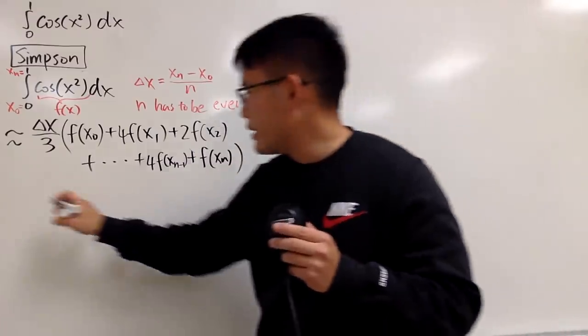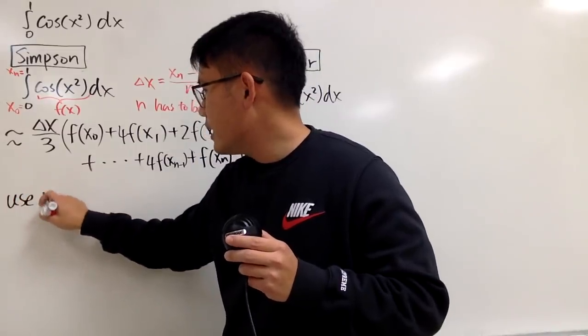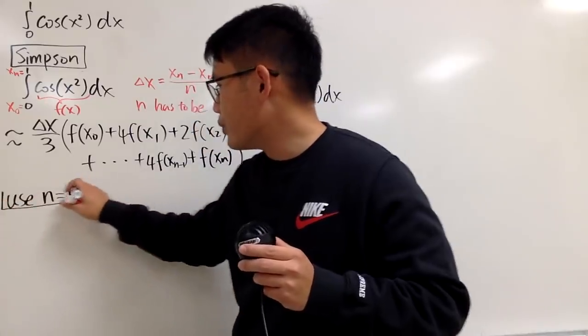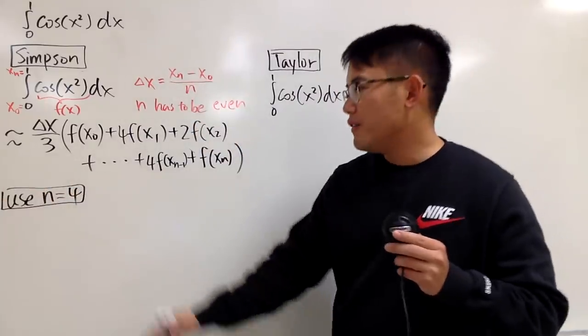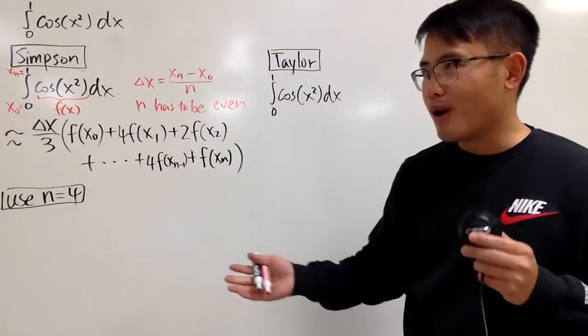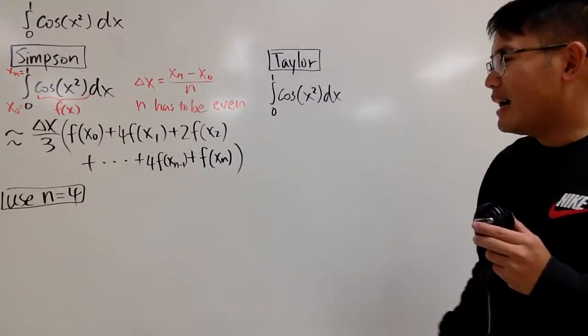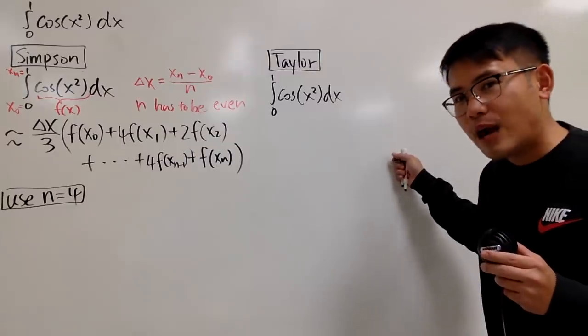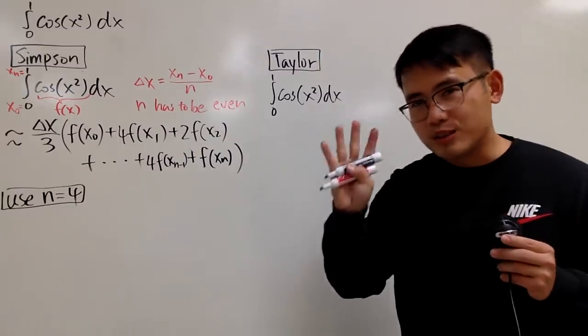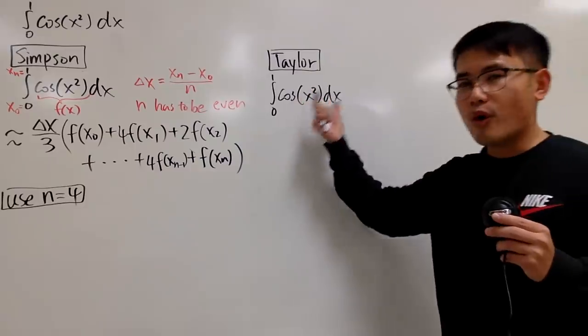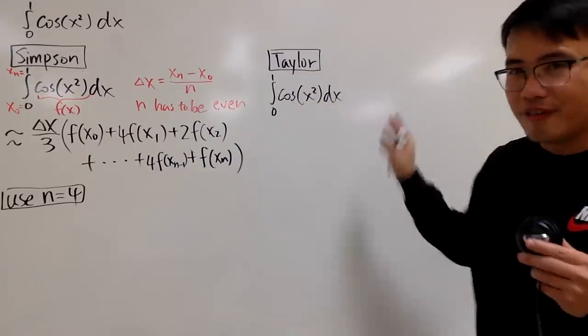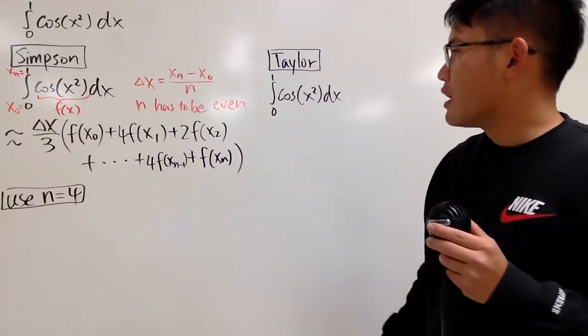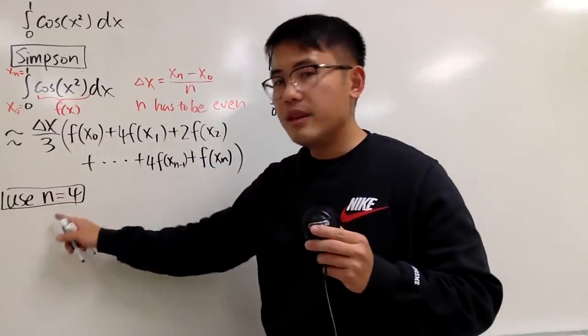In fact, I'm going to make this fair for both methods. Before we start, we have to choose an n value, and the n value has to be even. I will be using n equals 4. If I use n equals 2, that's too lazy. If I use n equals 6, that's too long. n equals 4 is just about right. I will also be using the first 4 non-zero terms for the Taylor series expansion. So 4 and 4, this is how it can be even.